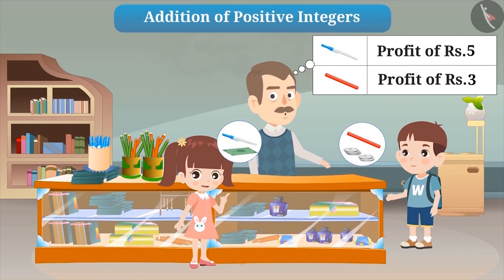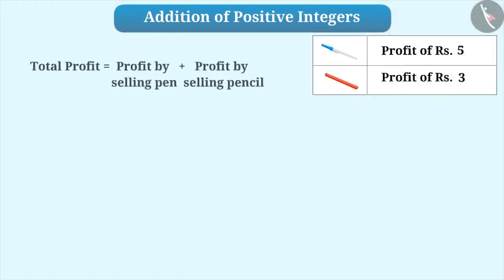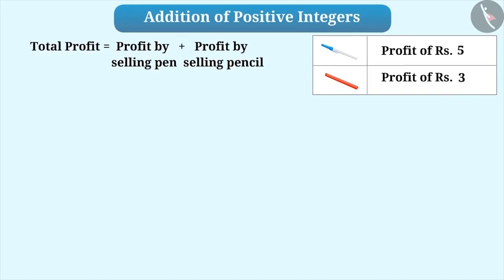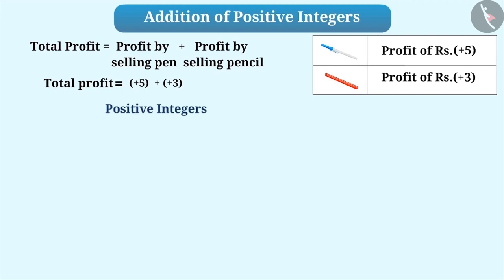Let's start with the addition of positive integers. Let us suppose a shopkeeper sold a pen and a pencil. He got a profit of Rs.5 on selling a pen and a profit of Rs.3 on selling a pencil. If we have to find the total profit, then we have to add the individual profits. Profit of Rs.5 is expressed as plus 5, and profit of Rs.3 is expressed as plus 3. So the total profit is plus 5 plus plus 3. Both are positive integers. For addition of any two positive integers, we add them without signs and then prefix it with a plus sign.